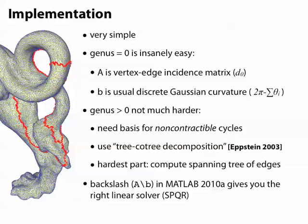Because our matrix A is just a vertex edge incidence matrix, and our right-hand side b is just the usual discrete Gaussian curvature, so 2π minus the sum of tip angles, minus whatever curvature we put at singularities.